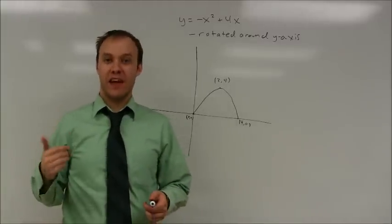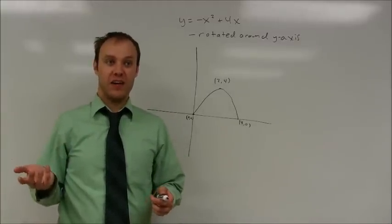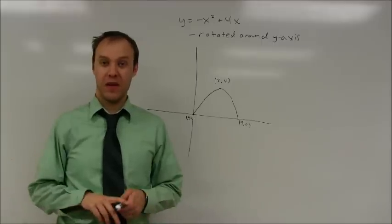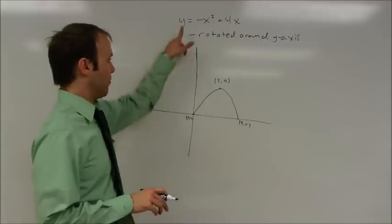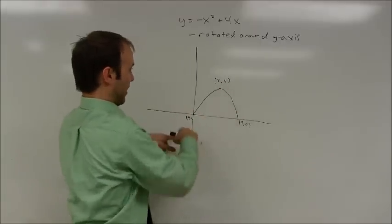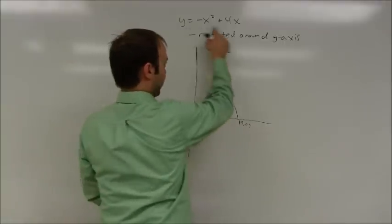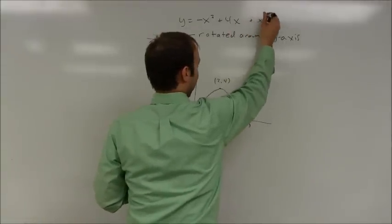This is a classic example of a case where cylindrical shells are very useful and, in fact, may be about your only method to be able to do one of these problems. If I've got the graph of y equals negative x squared plus 4x, which is a parabola that goes like this. Let's say that this is bounded by this equation and the x-axis.